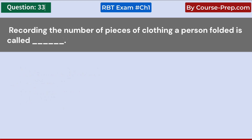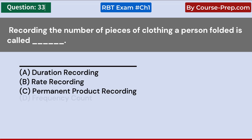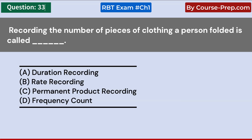Recording the number of pieces of clothing a person folded is called: A. Duration recording. B. Rate recording. C. Permanent product recording. D. Frequency count. Answer C: Permanent product recording.